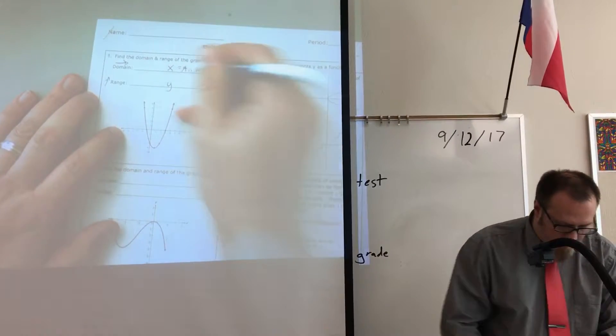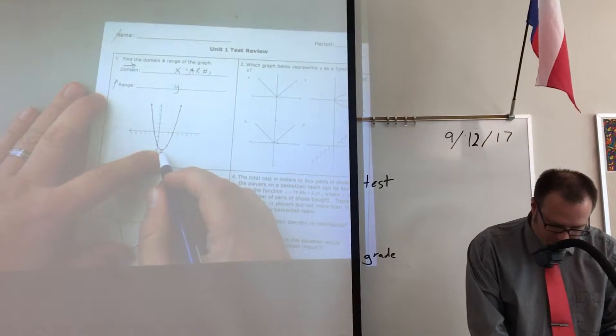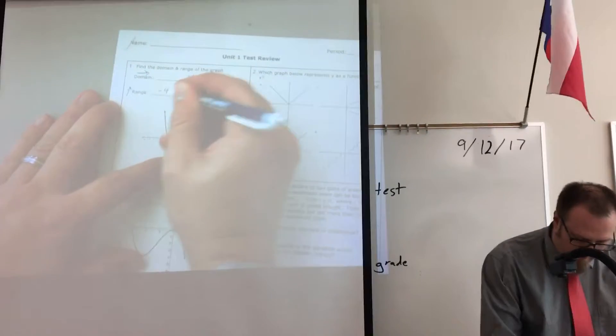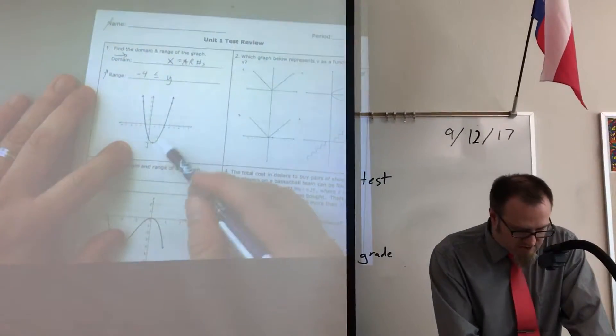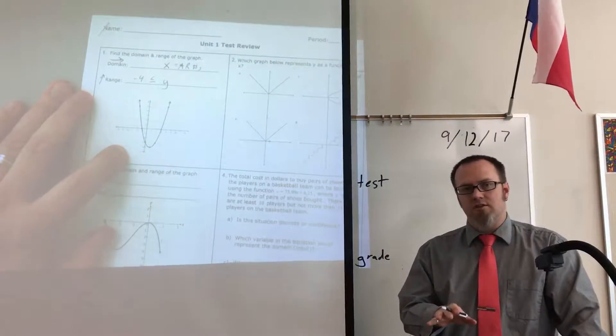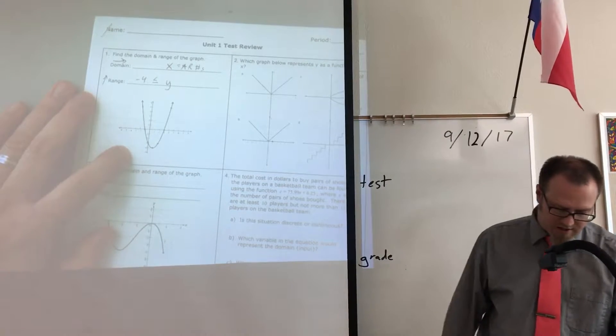Okay, the range on this one though, we do have a lower limit of negative 4. That goes on the left-hand side, it touches it, it's less than or equal to. I've had a lot of people say, well, I can see points. That doesn't make it discrete, so don't start listing those points.